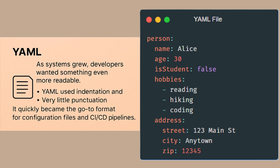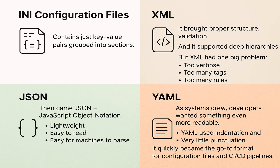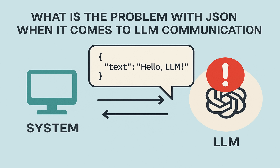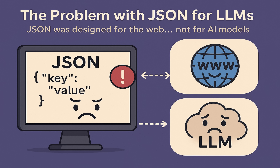Now that we have understood all the popular configuration formats, let's talk about the real question: what is the problem with JSON when it comes to LLM communication, and how does TOON fix it?